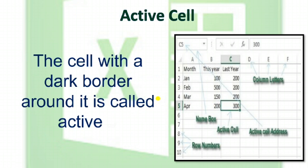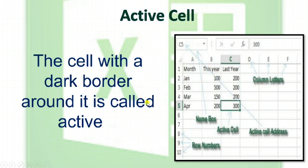Now, Active Cell: the cell with a dark border around it is called an active cell. This cell is the active cell as it has a border around it. When you select any cell or write any value, that cell will have a black border around it — that is called an active cell. The name and address of the cell will be defined in the Name Box at the top where C5 is written.